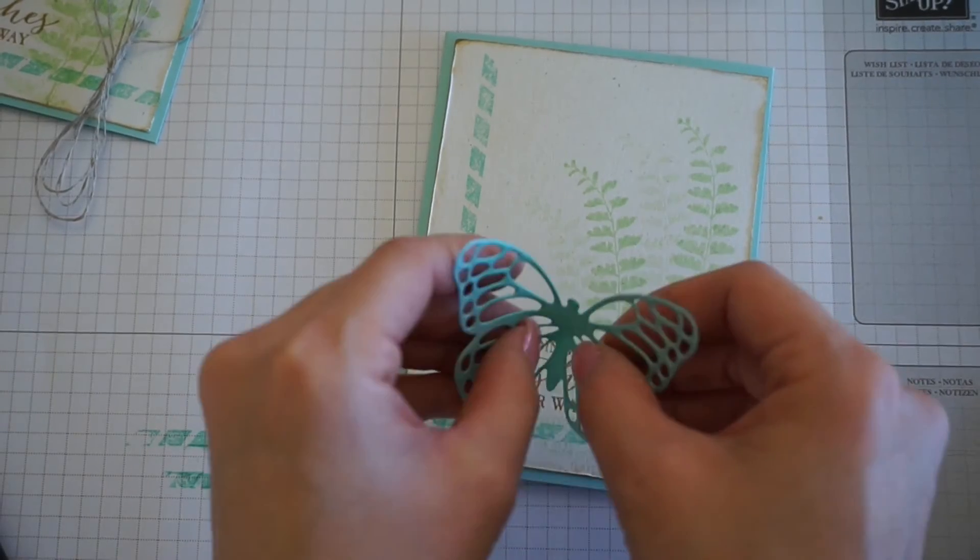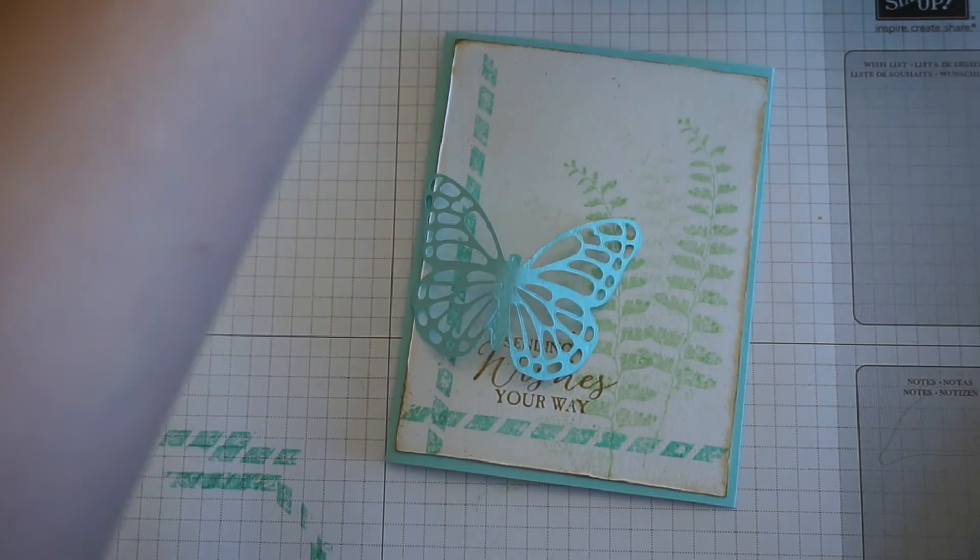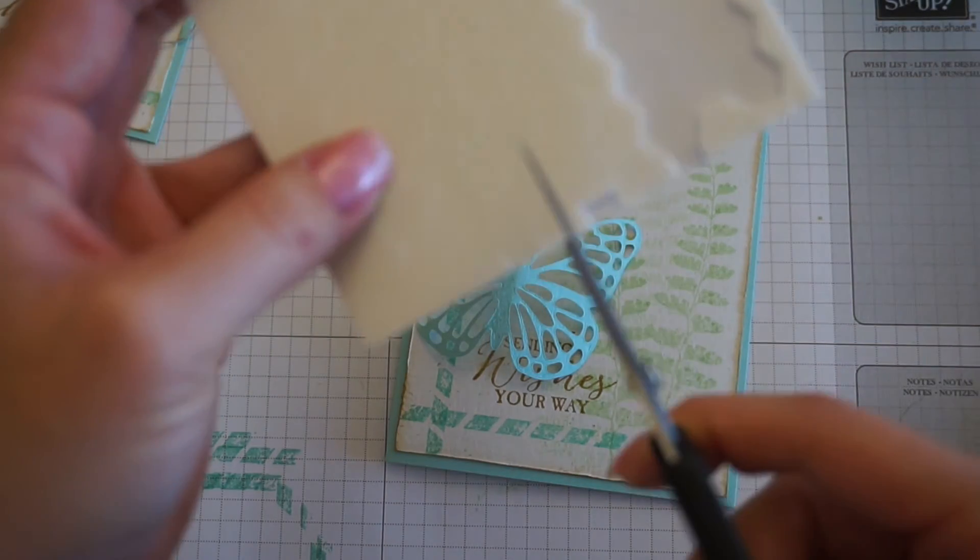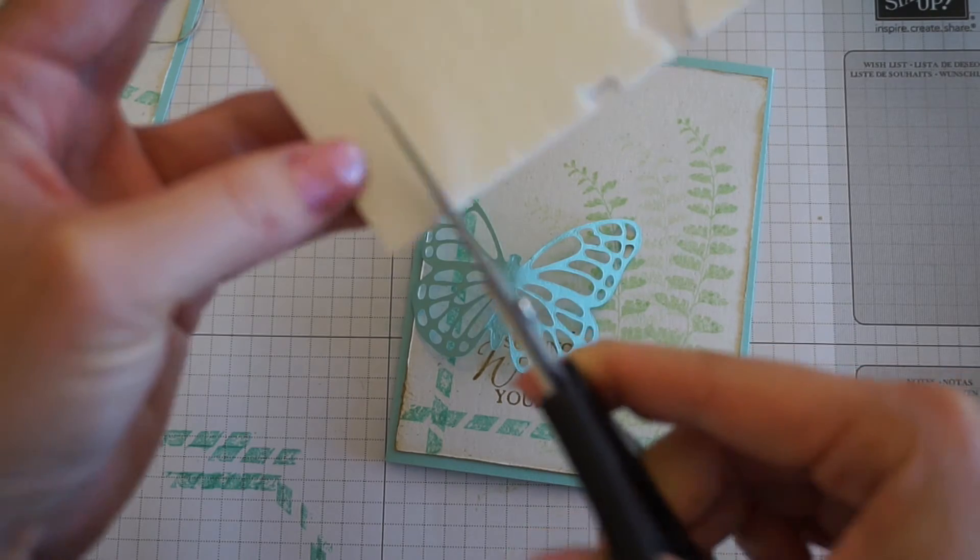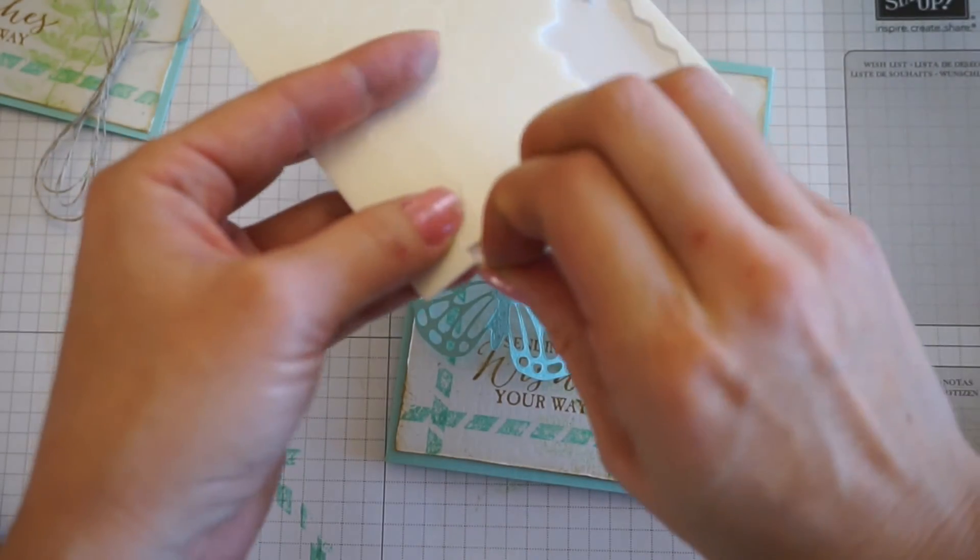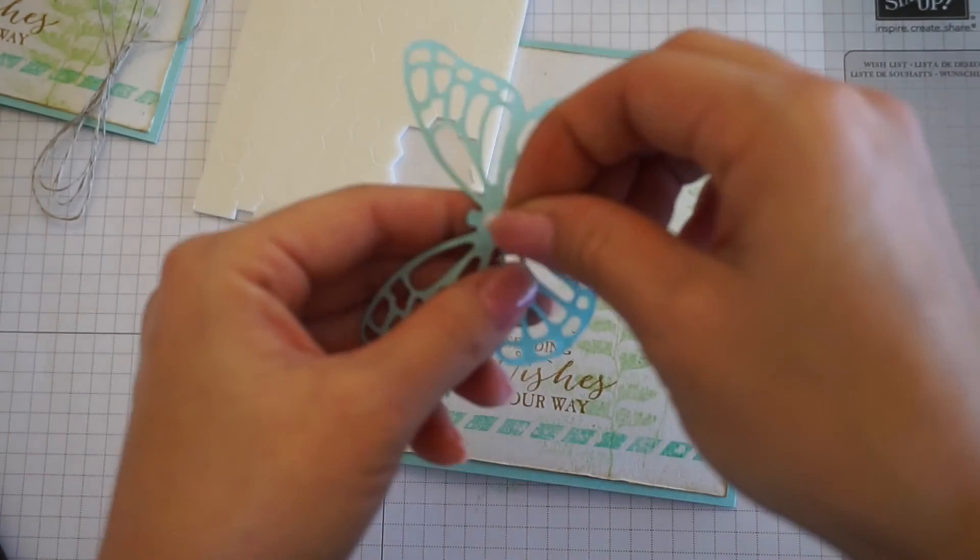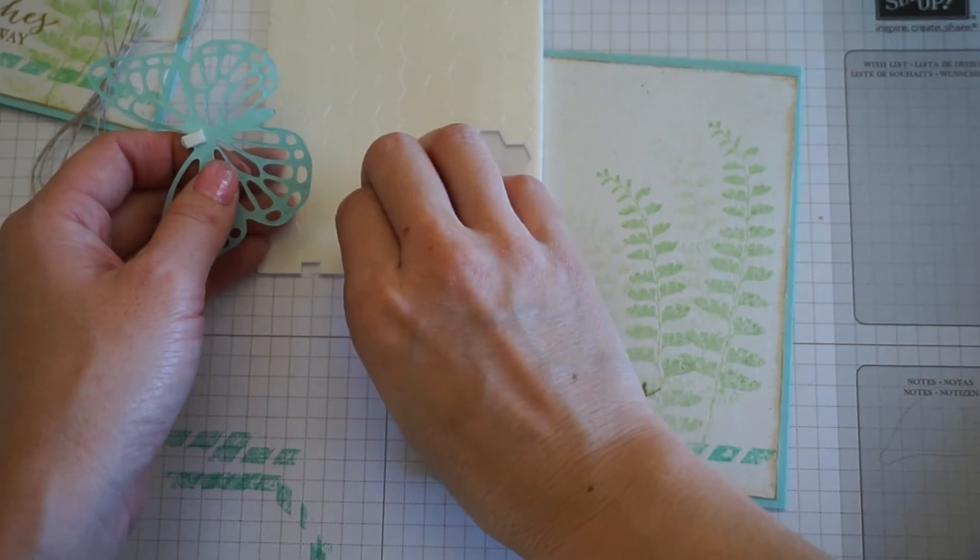Next you want to bend the butterfly so its wings are a little propped up. What I did was I cut, you can either cut a dimensional in half or you can cut little pieces from the edge of your dimensional sheet, so it fits on the back because you don't want to see it from the front.